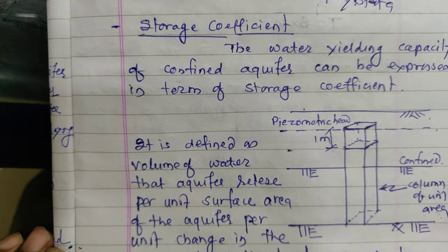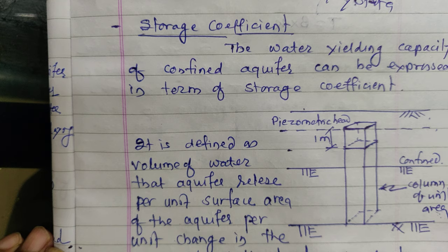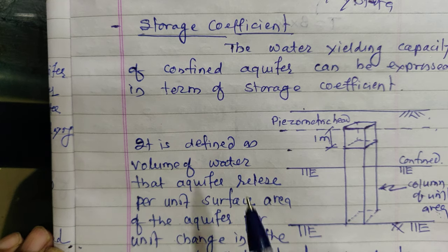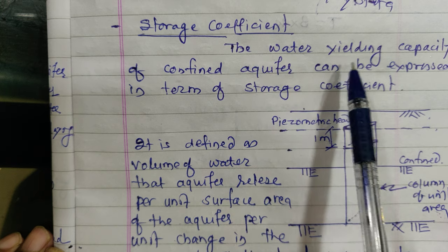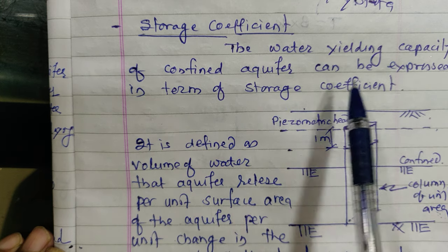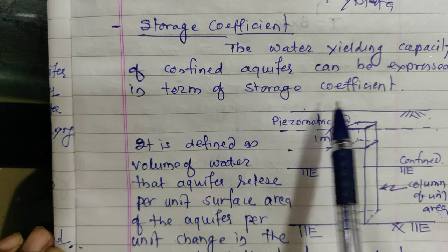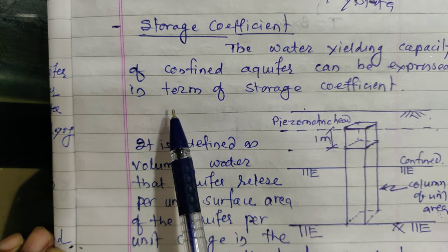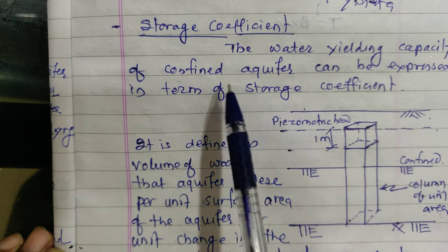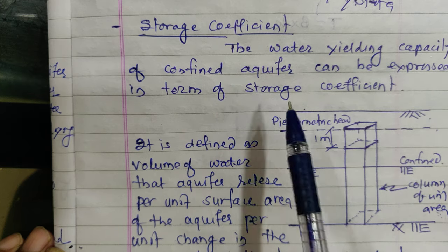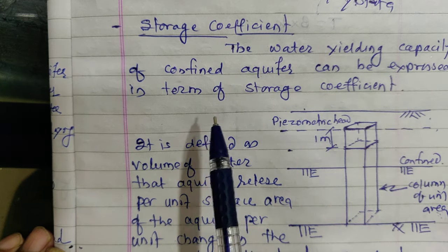We will see some definitions. The first one is storage coefficient. The water yielding capacity of a confined aquifer can be expressed in terms of storage coefficient — that is, how much water can be taken from the aquifer.